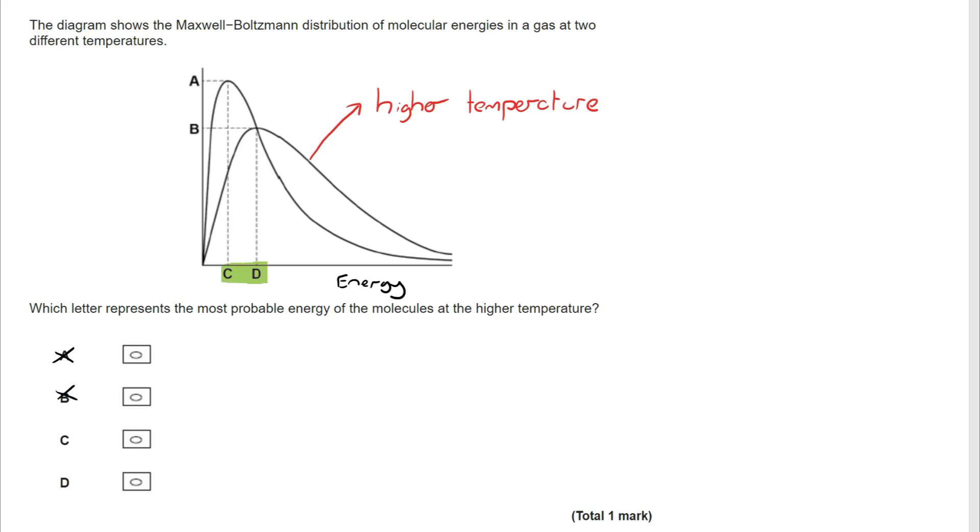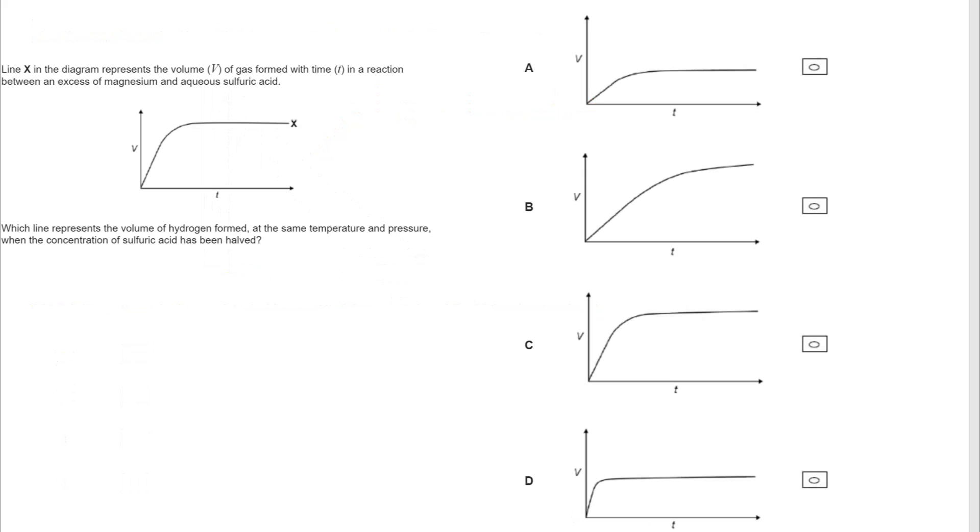And it also means there will be, in more general terms, more particles with more energy. So you would expect it to be higher on the right-hand side, as we can see. So the correct answer is, therefore, D. Next question.